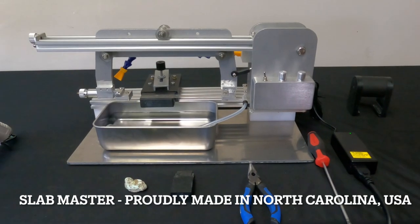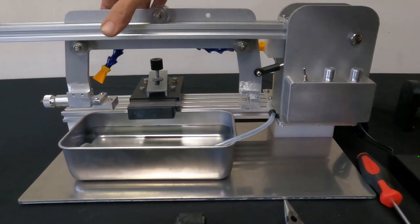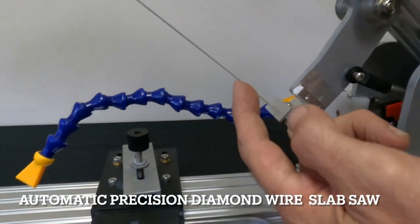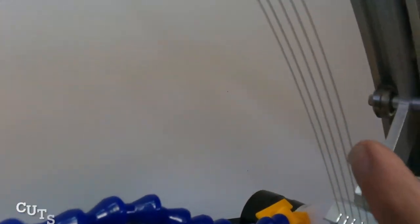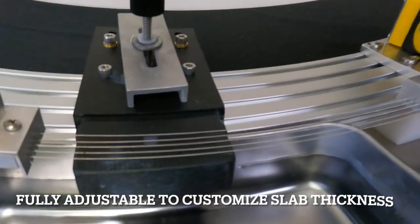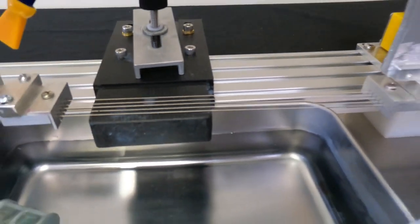Introducing the Slabmaster Precision Diamond Wire Saw by Showoff Lighting. You'll notice five precision diamond blades. These are 0.4 millimeter. The saw can take anything from 0.25 to about 0.75 millimeter on the blades with infinitely variable spacing.